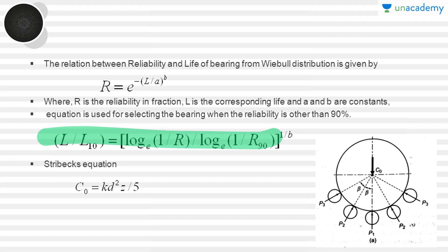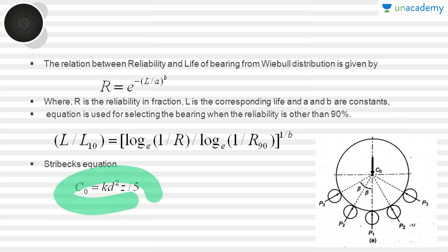Stribeck's equation gives the static load carrying capacity as C0 equals K·D²·Z divided by 5, where D is the diameter of the balls, K depends on the radius of curvature at the point of contact between the balls and the races, and Z is the number of balls in the bearing. This value of K can be found from the properties of the balls in that ball bearing.